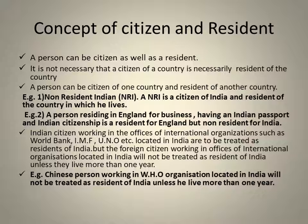A person can be a citizen of one country and a resident of another country. For example, NRIs (Non-Resident Indians) hold citizenship of India but are living in New York or Canada. They are NRIs for India. Similarly, a person residing in England for business, having a restaurant in England and holding an Indian passport — he is a resident of England but a non-resident for India and a citizen of India.